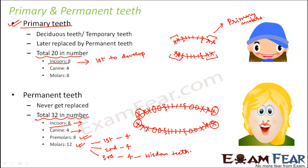The front teeth — incisors — are used only for biting; they cannot grind food. Canines are very sharp and help in tearing food. Premolars and molars are comparatively large-sized and have a flat surface, which is why they are good for grinding food into simpler forms. So molars and premolars are the grinding teeth.